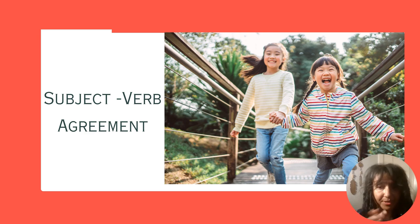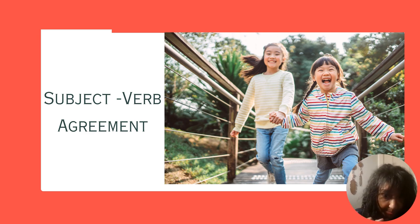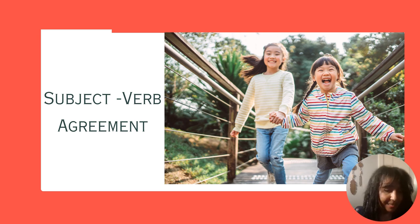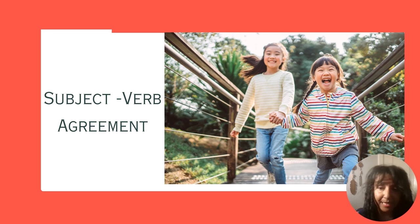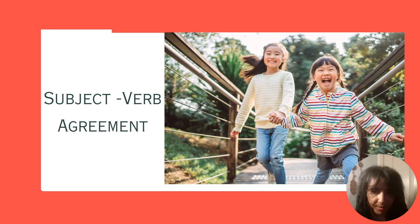Hello everybody, this is Robin Norgren. I'm your third grade teacher in Arizona going over Common Core Standards. Today's Common Core Standard is subject-verb agreement. This is something that I find my students struggling with, and I hope that this is a help to you in your classroom to really get a handle on what it means to have the subject and the verb agree in a sentence. So let's begin.